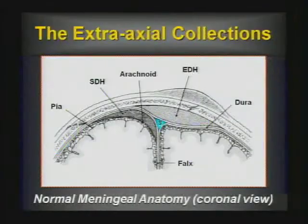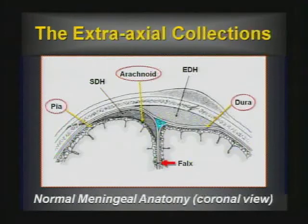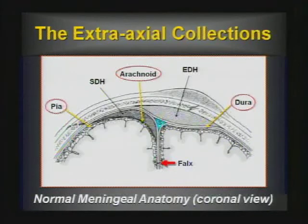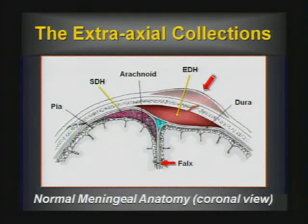Your classic acute subdural hematoma. To refresh your memory on anatomy: three meningeal layers — the pia, the arachnoid, and the dura, which is a bilayered structure forming the falx and tentorium. The falx and tentorium are composed of the two layers of the dura, which are closely adherent except at the dural sinuses. The superior sagittal sinus is formed by the two dural layers splitting. An epidural hematoma is above the outer dural layer; a subdural hematoma is beneath the inner dural layer.